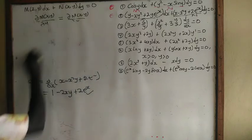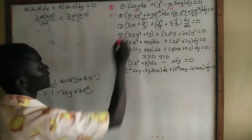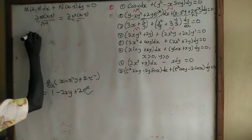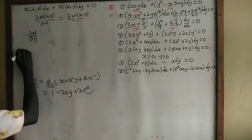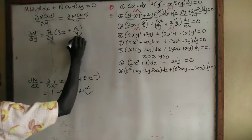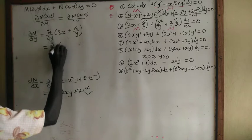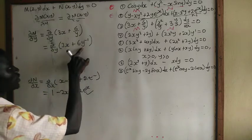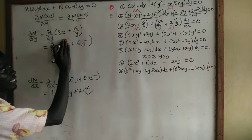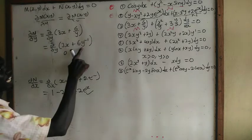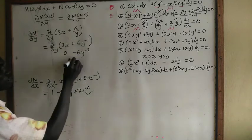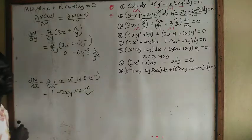Now let's go to number 3. For number 3, this is our M and this is our N. Del M on del y equals del/del y of 3x plus 6 over y, which is the same as del/del y of 3x plus 6 times y to the power negative 1. Since we differentiate with respect to y, 3x becomes a constant giving zero. Differentiating 6y to the negative 1 gives negative 6y to the negative 2, which is negative 6 divided by y squared.